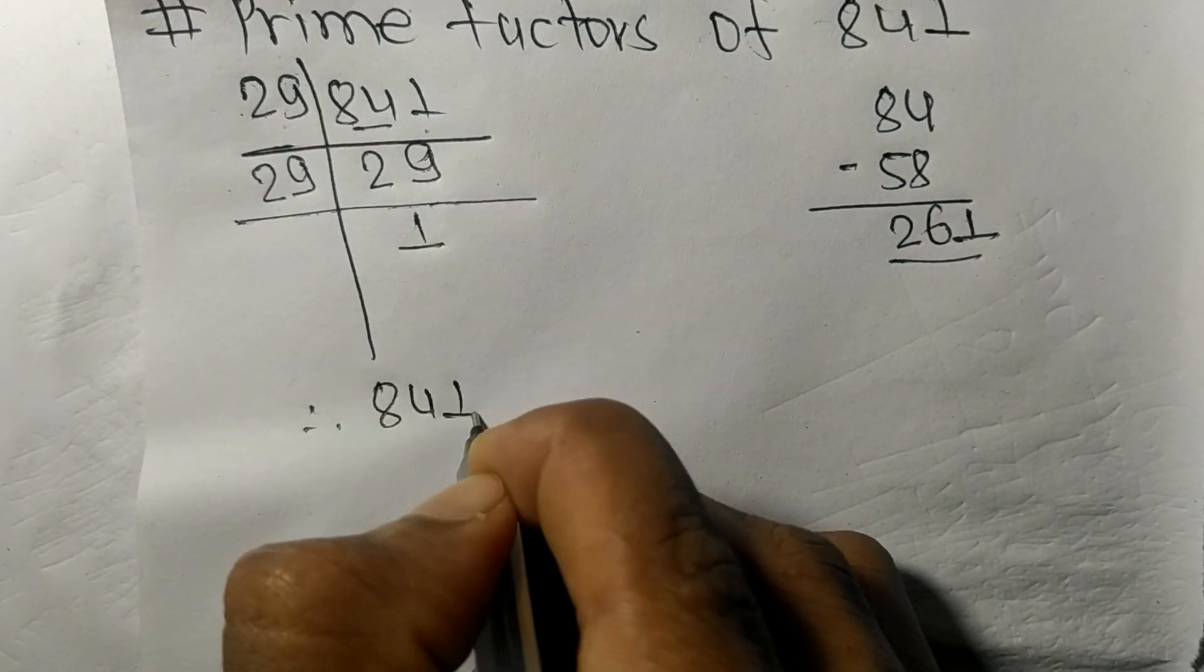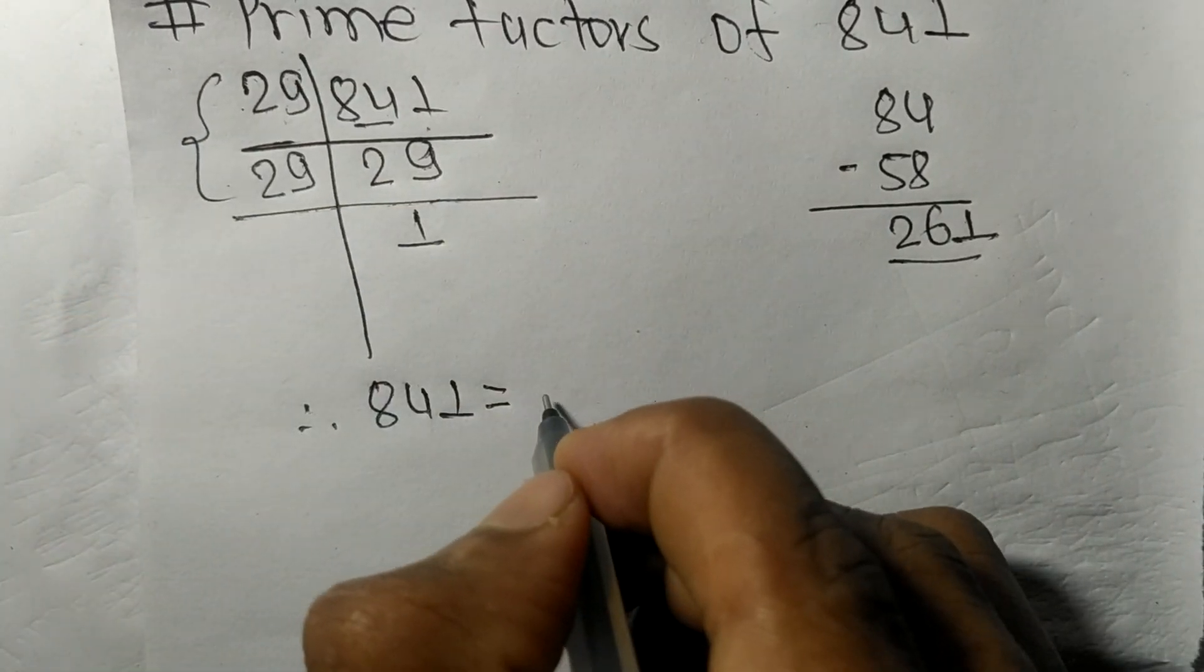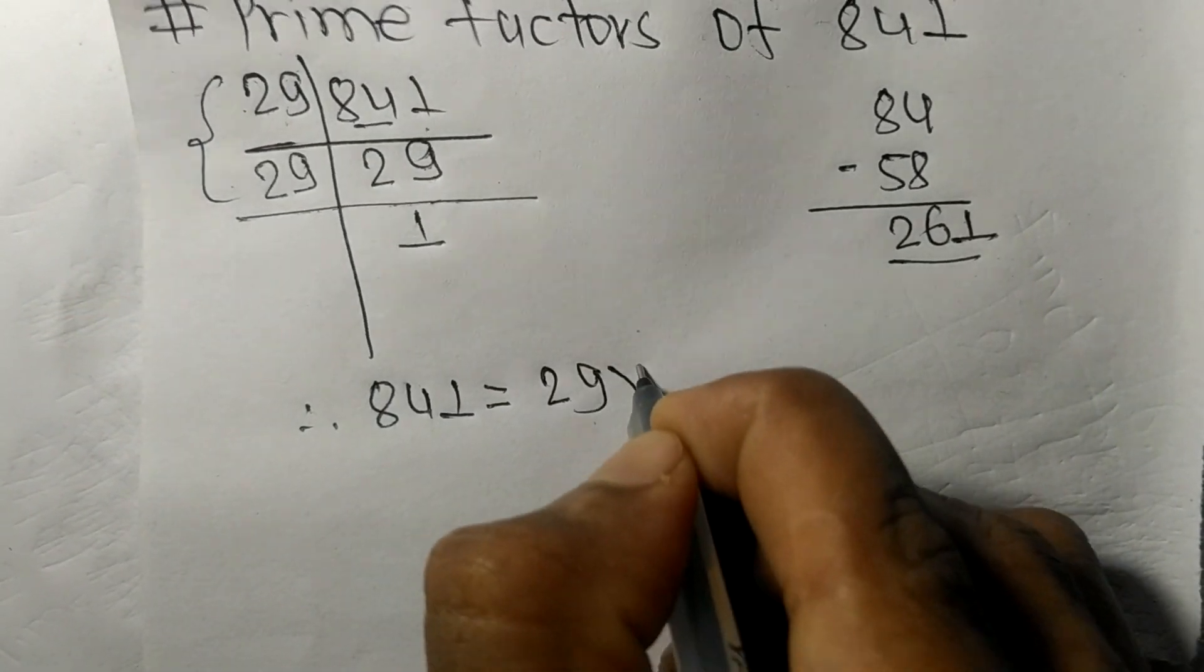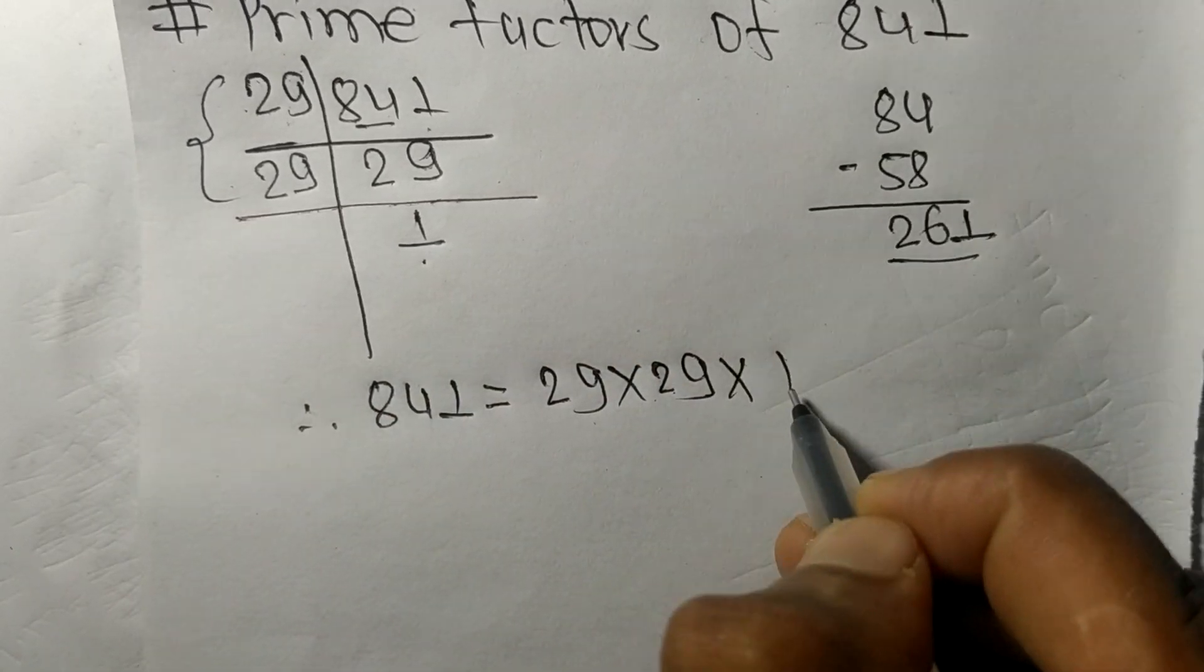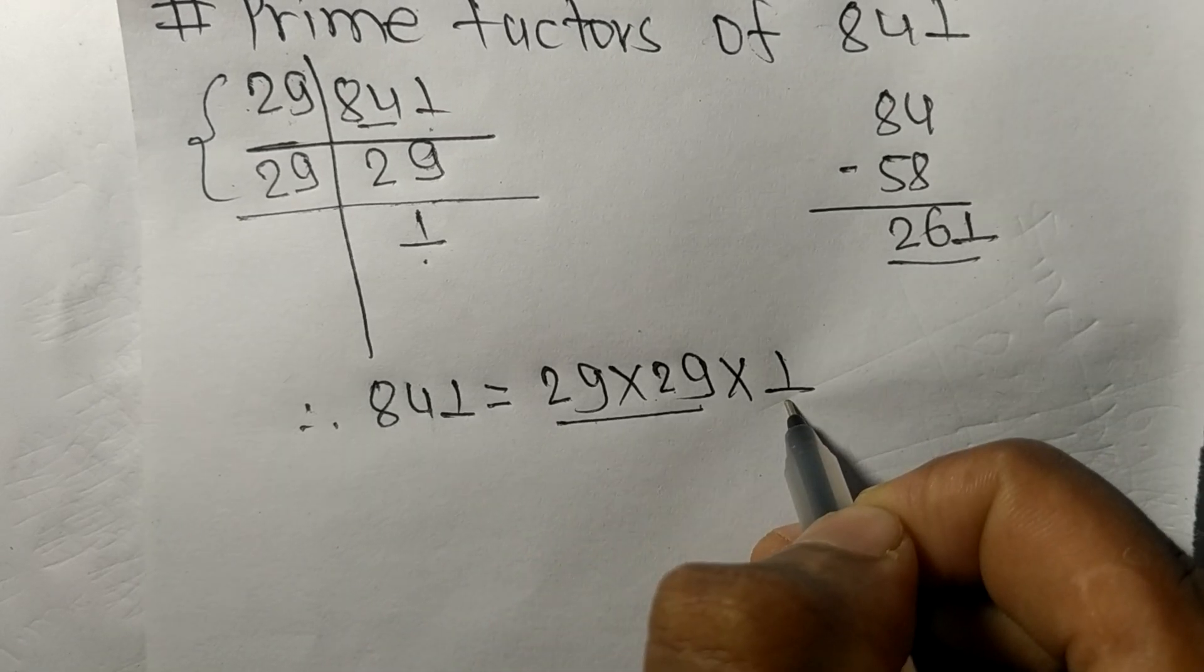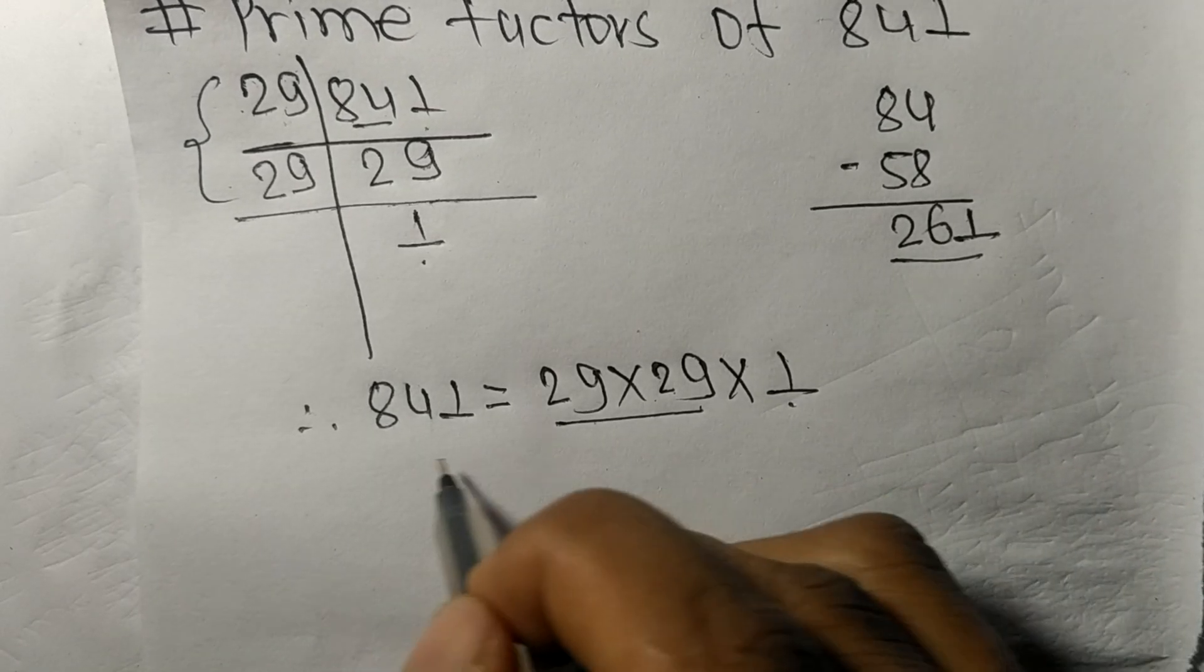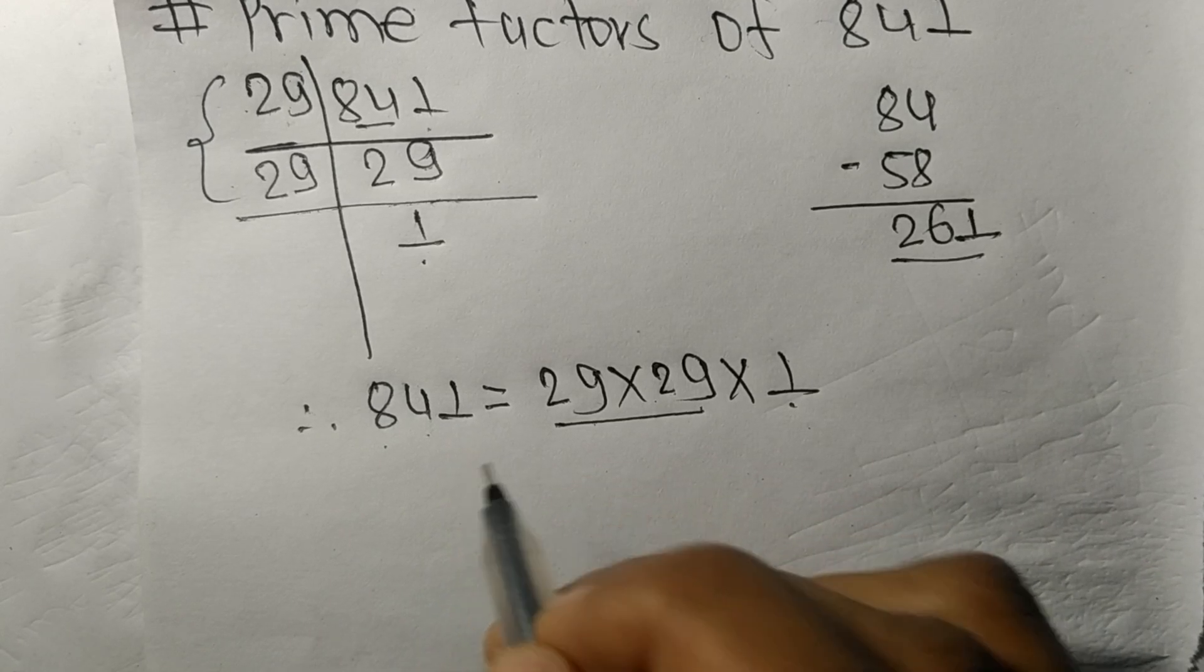Therefore 841 is equal to, from this side it is 29 times 29, from here it is 1. So 29 and 1 are the prime factors of 841. So this much for today and thanks for watching.